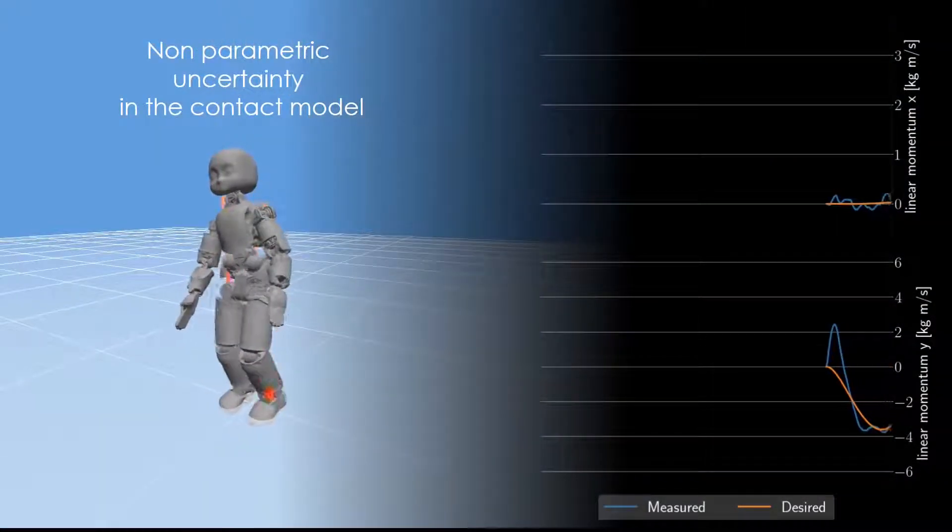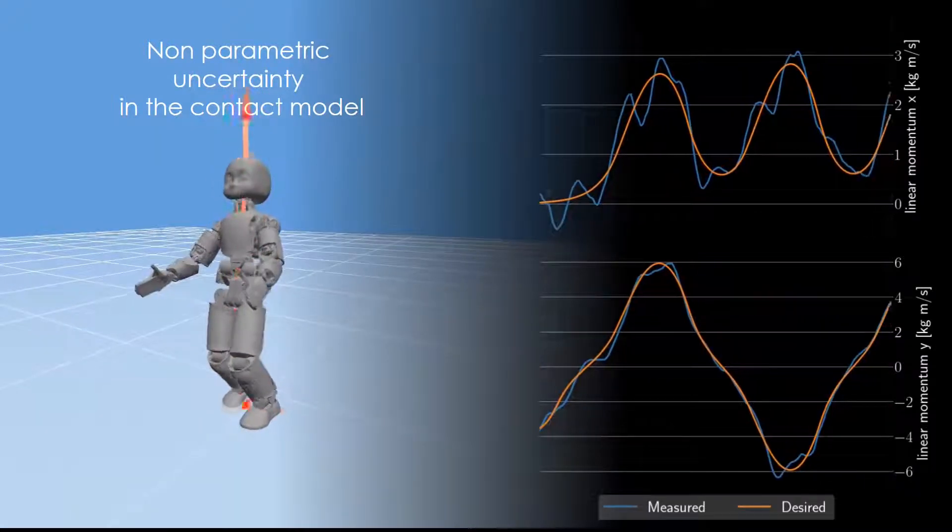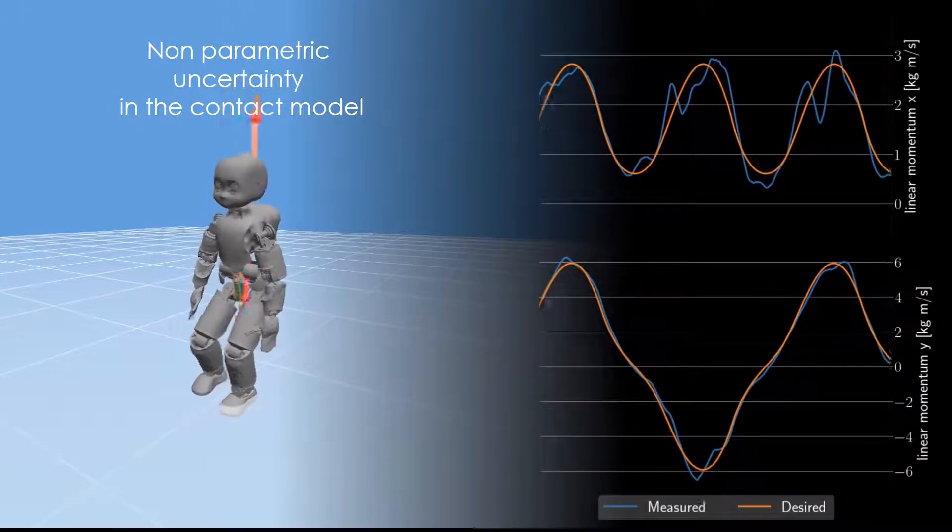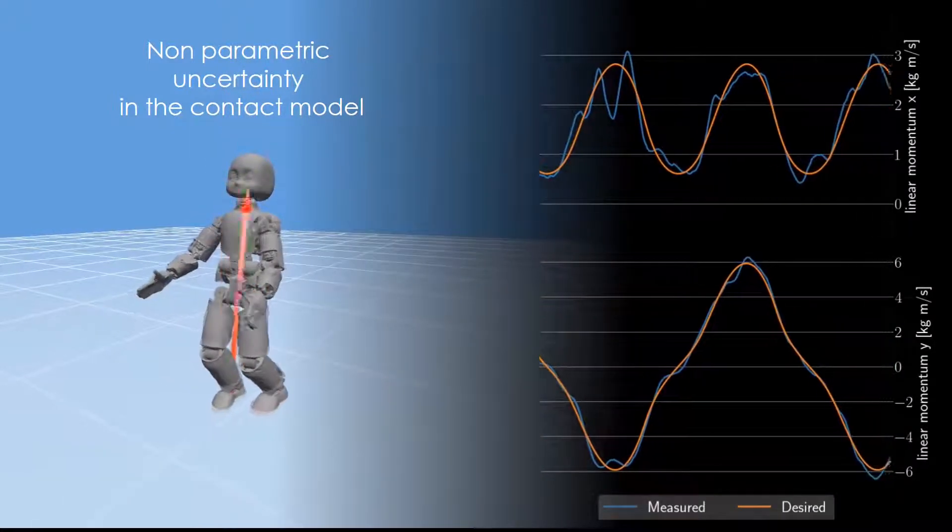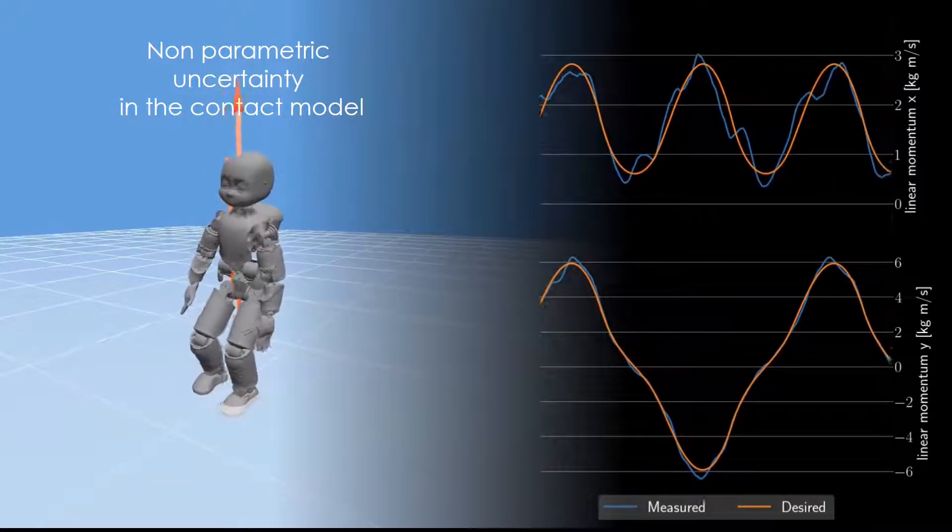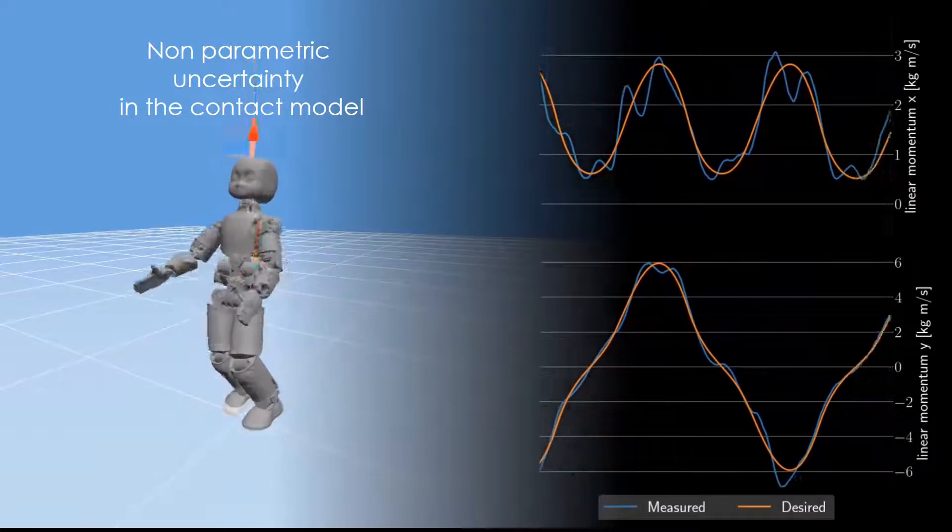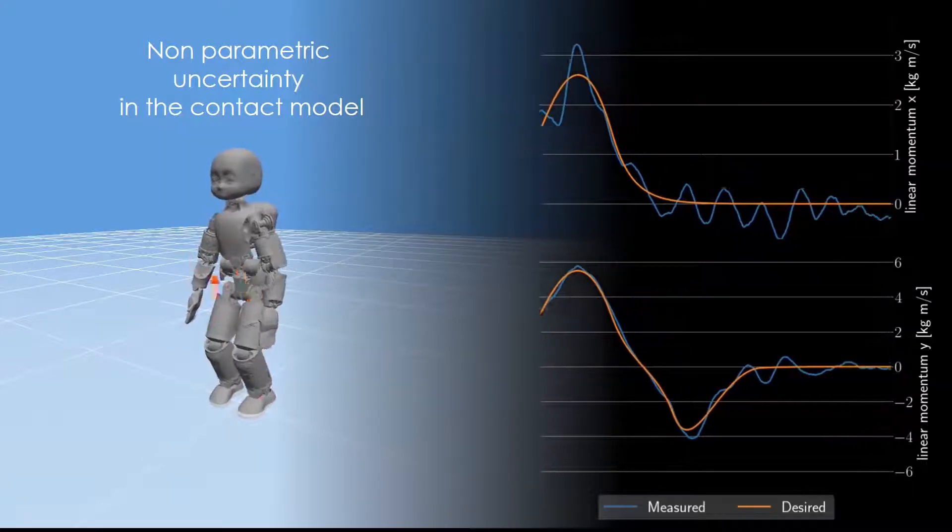Here we analyze the robustness capabilities of the TSID-Compliant controller in the case of non-parametric uncertainty in the contact model. We modeled the uncertainty by using a Gaussian noise with zero mean at a given standard deviation. Despite the uncertainty on the model, the controller can guarantee good tracking performances.